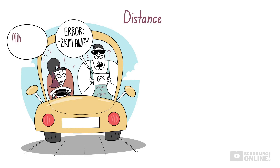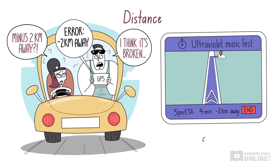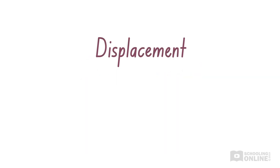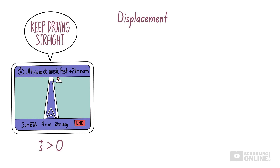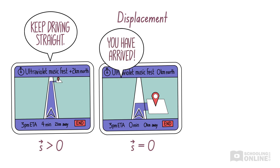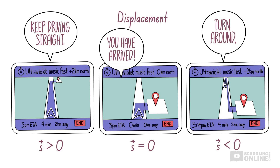Before we finish, let's examine the key differences between distance and displacement. Distance is always greater than or equal to zero — you cannot drive a distance of minus two kilometres. On the other hand, displacement can take any value. A positive displacement means in the same direction. If the displacement is zero, the object's position doesn't change — it remains in the same spot. A negative value means in the opposite direction. The positive or negative sign indicates what you should do with the direction of the vector.